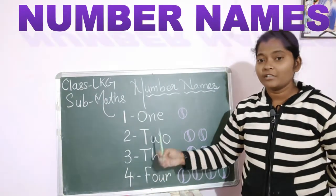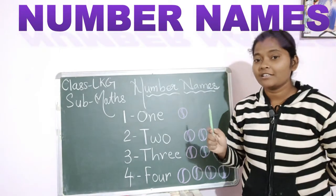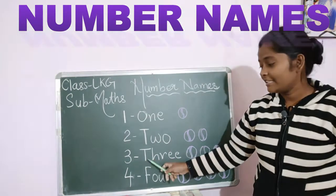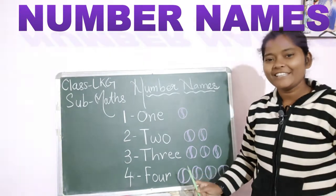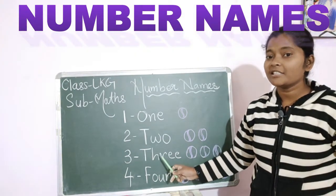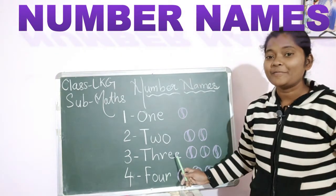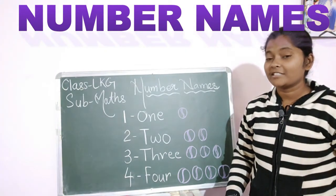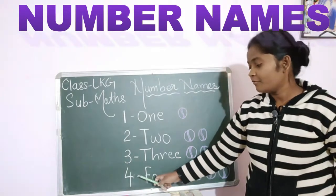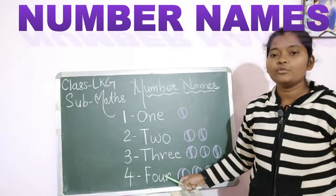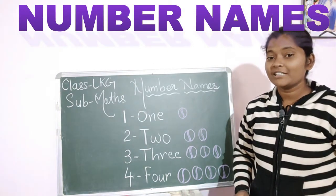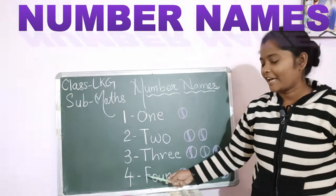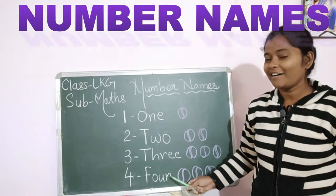Today we are going to learn two number names, that is 3 and 4. So what is the number name of 3? T-H-R-E-E — 3. Read children: T-H-R-E-E — 3. Say with me: T-H-R-E-E — 3. Now let's read number 4: F-O-U-R — 4. Say children: F-O-U-R — 4. Repeat: F-O-U-R — 4.